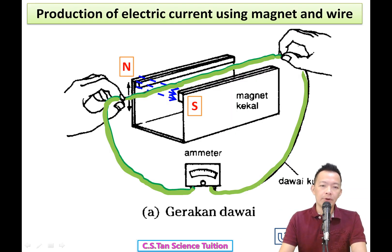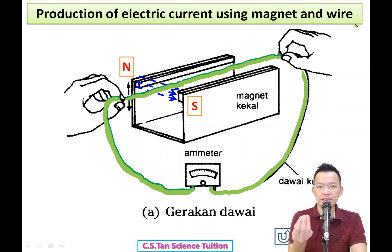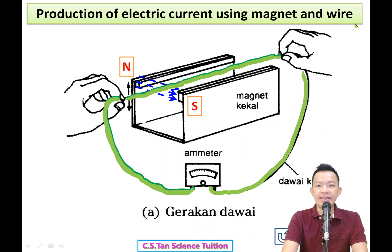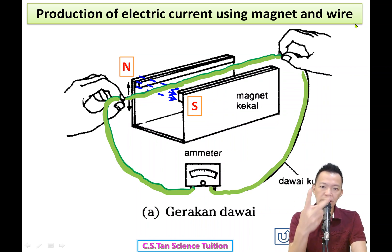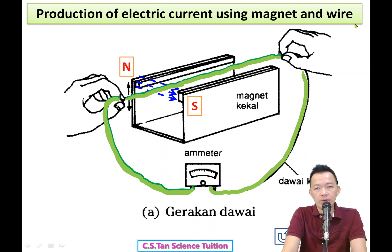The title is: Production of Electrical Currents Using the Magnet and Wire. So where does electrical energy come from? 电能从哪里来？代的抹发电器里面有什么东西呢？Inside the dynamo there are only two things: magnet and wire.